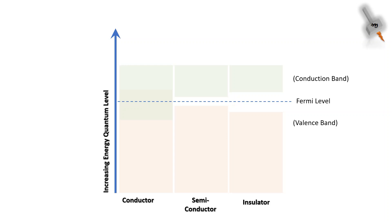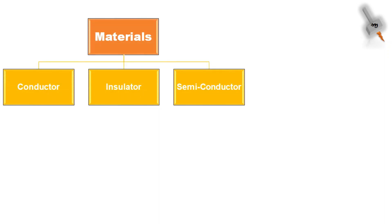An insulator has the valency band and conduction band placed too far apart, making it difficult to initiate a current flow even at a higher voltage. So we have classified materials as conductor, insulator, and semiconductor.